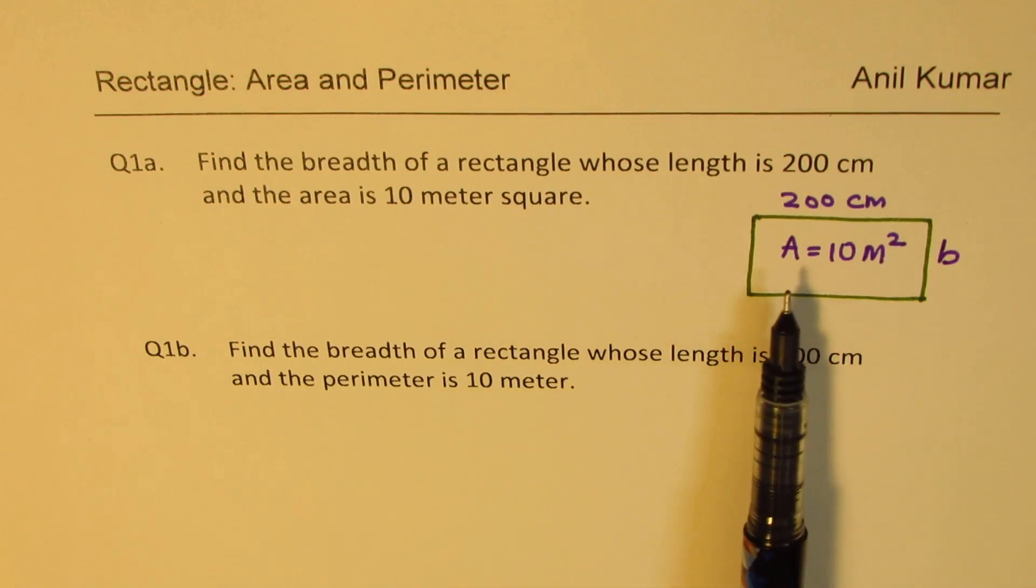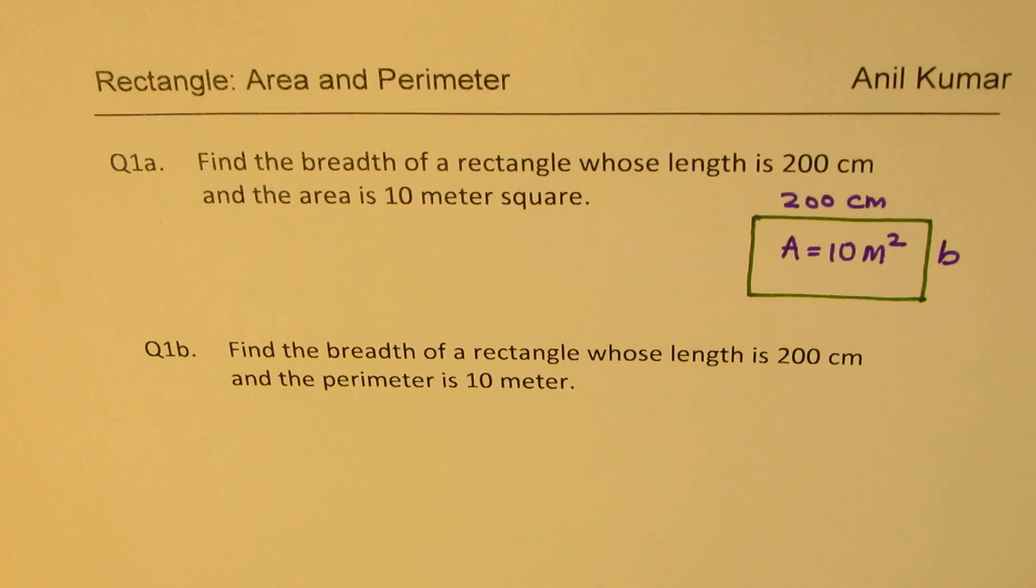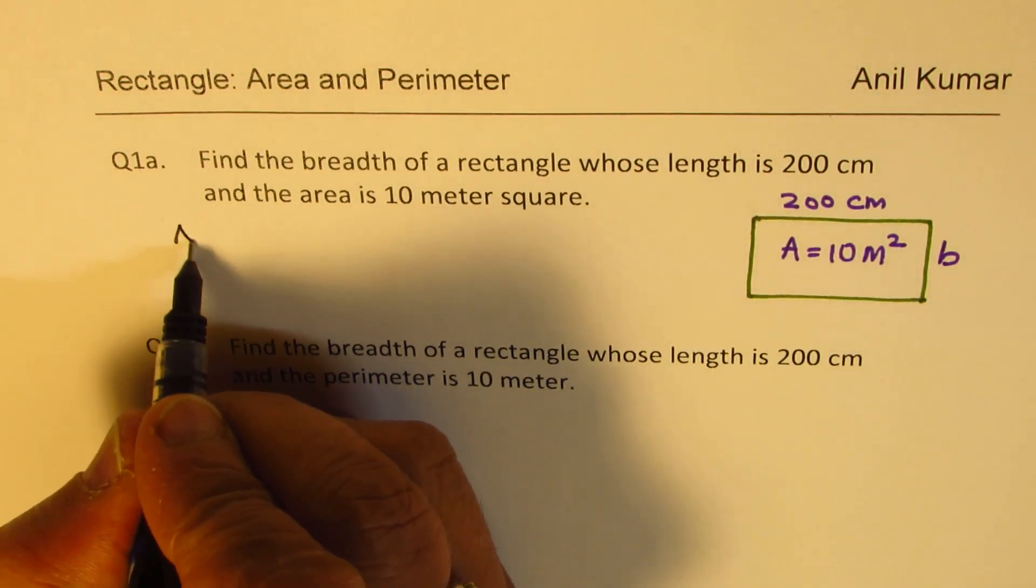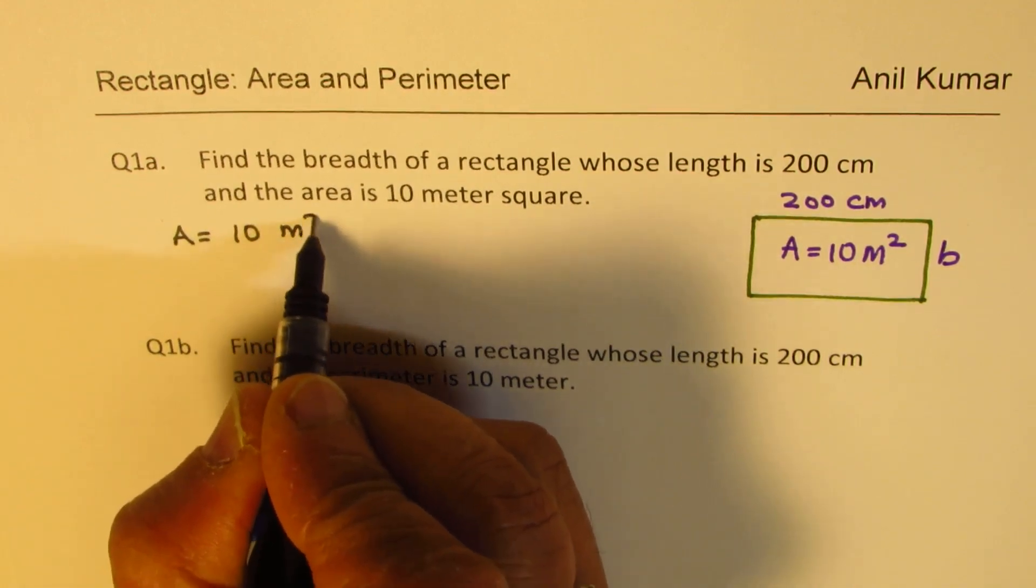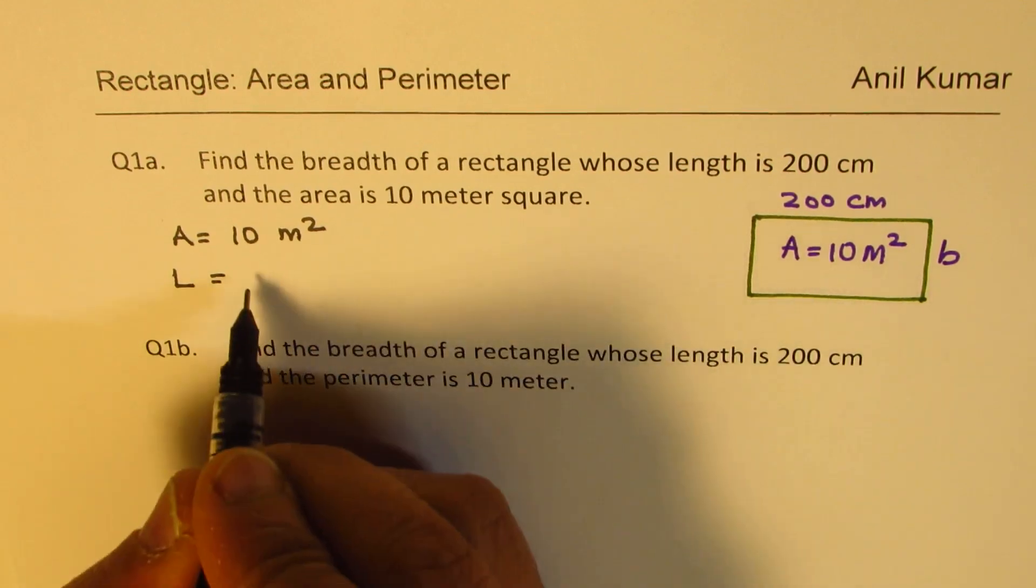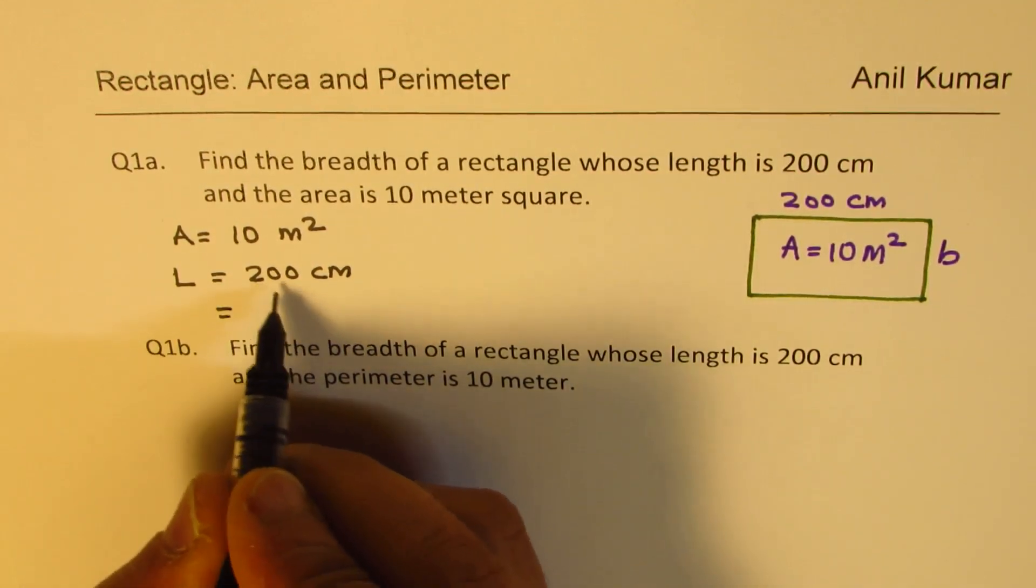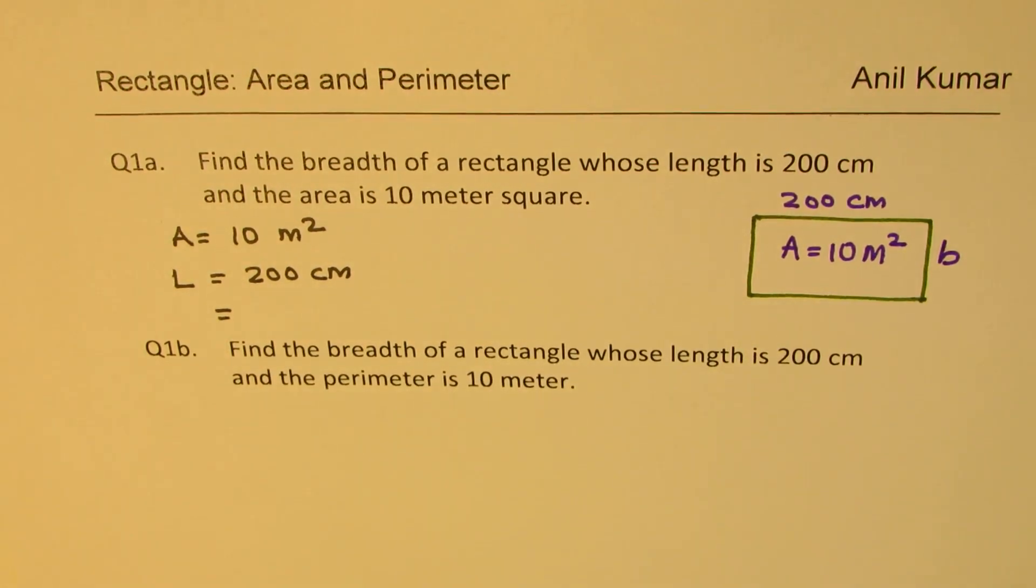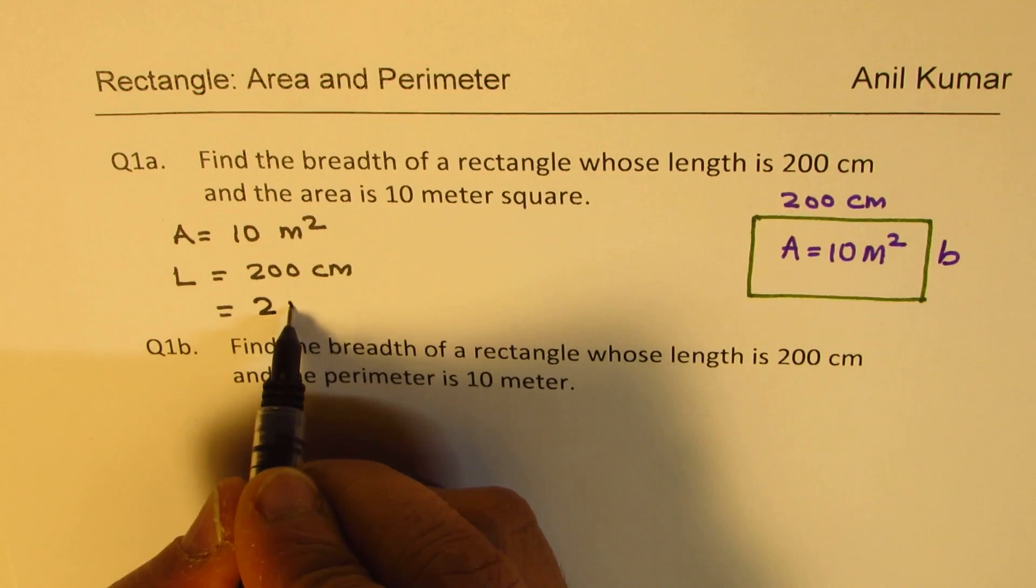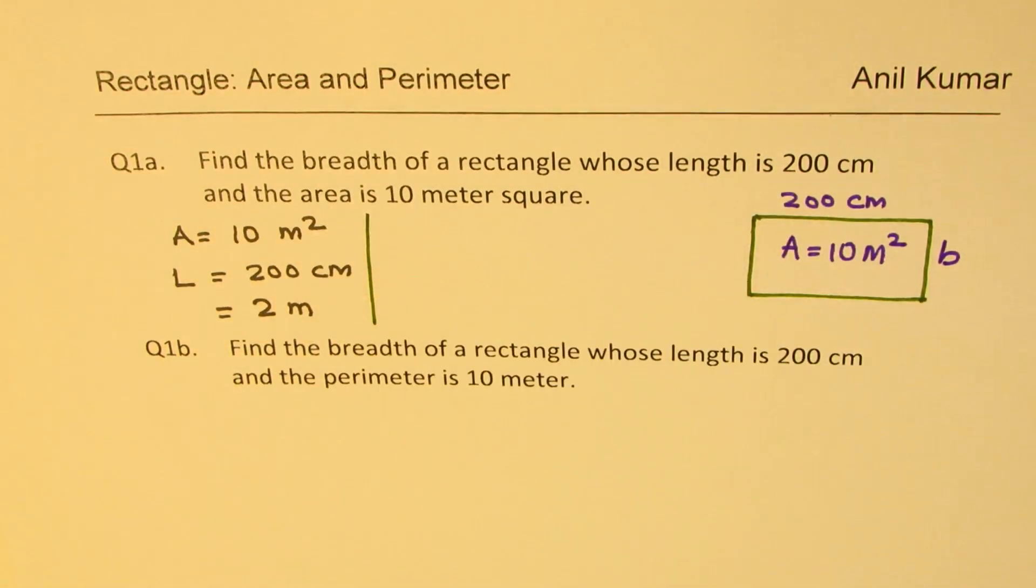In this question, you'll observe that the units are different. So it may be a good idea to convert the units. Since we are given area as 10 meters squared and the length as 200 centimeters, it's a good idea to write this in meters. One meter is 100 centimeters, so it becomes 2 meters.